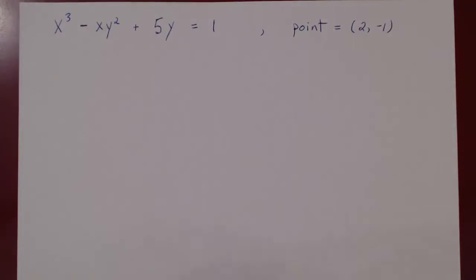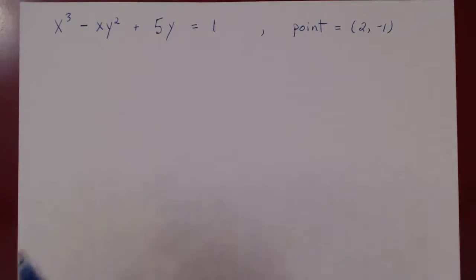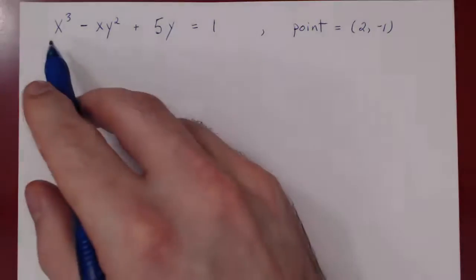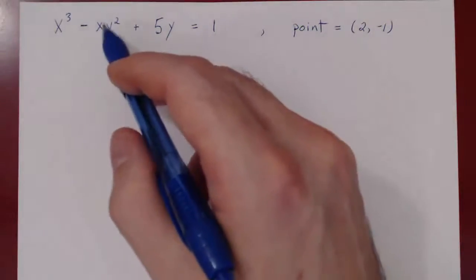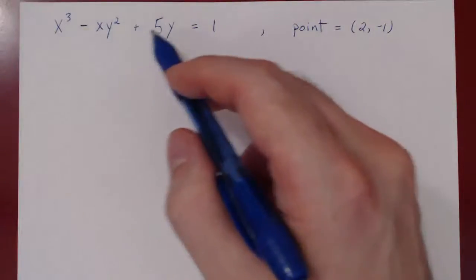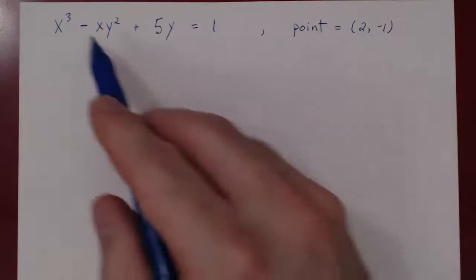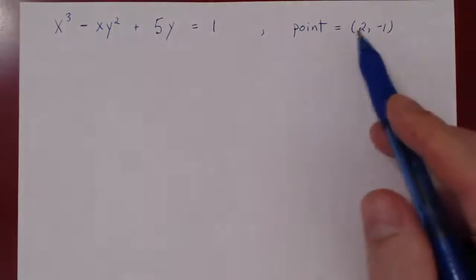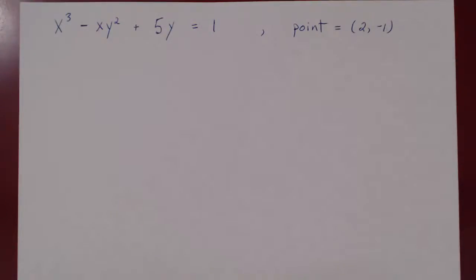In this video, we will consider additional problems of implicit differentiation. Here's the problem: we're given a curve with equation x cubed minus xy squared plus 5y equals 1. We want to find the equation of the tangent line to this curve at the point x equals 2, y equals negative 1.